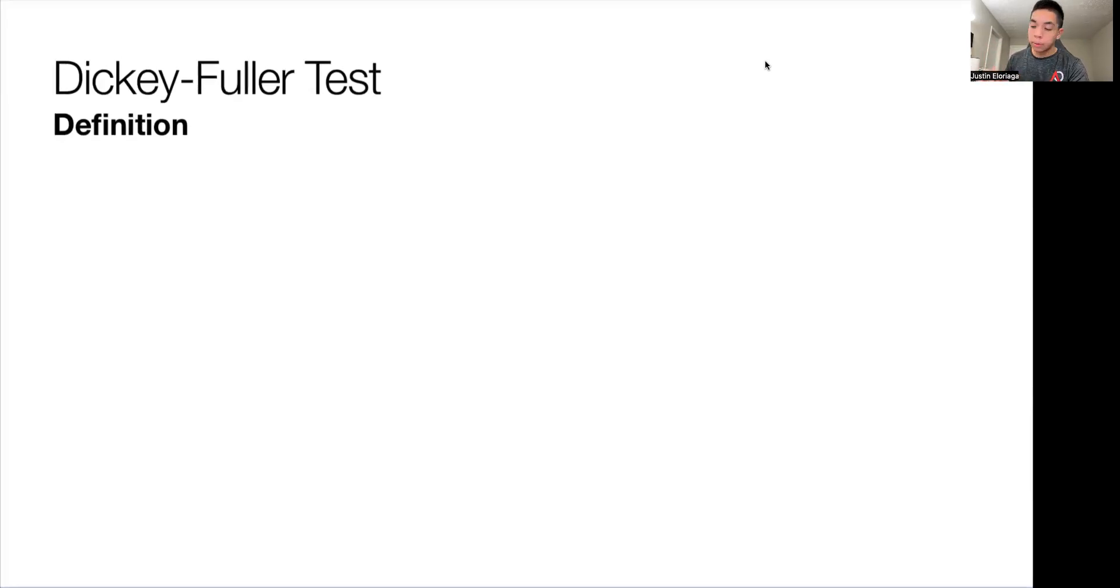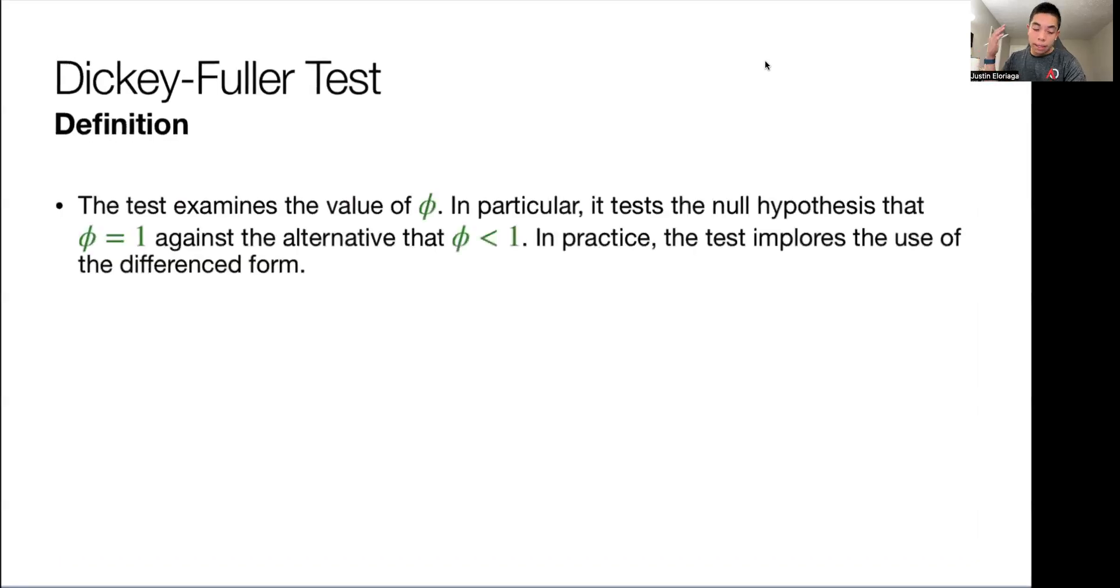So how does this Dickey-Fuller test work? This test essentially examines the value of phi, phi being an autoregressive coefficient. And in particular, it tests the null hypothesis that phi is equal to 1 against the alternative that phi is less than 1. In practice, this test employs the use of a difference form.